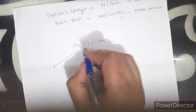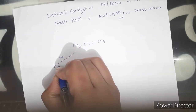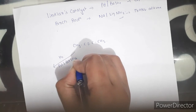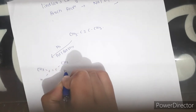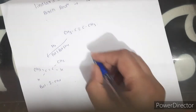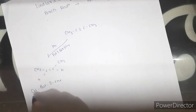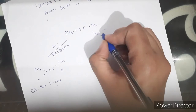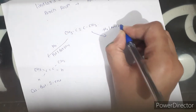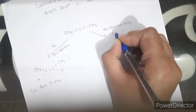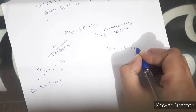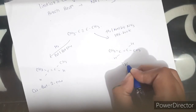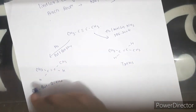For example, reduction of butyne in the presence of Pd with BaSO₄ (Lindlar's catalyst) gives cis-2-butene. But if the same reduction is carried out using sodium in liquid ammonia (Birch reduction) at temperature 196–200 K, the corresponding trans-alkene is formed. So Birch reduction always gives trans-alkene formation, and Lindlar's catalyst always gives cis-alkene.